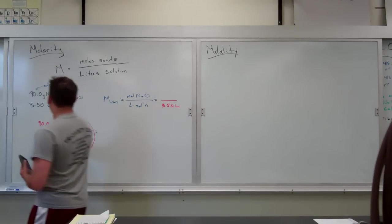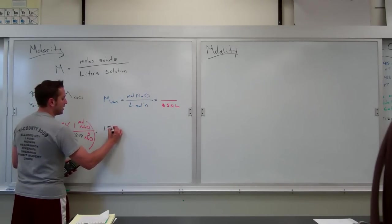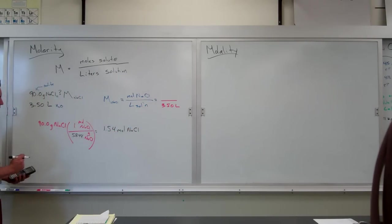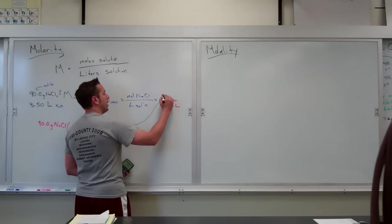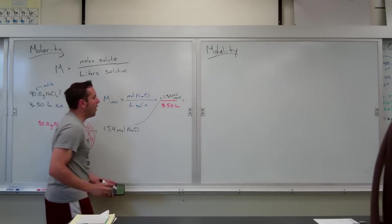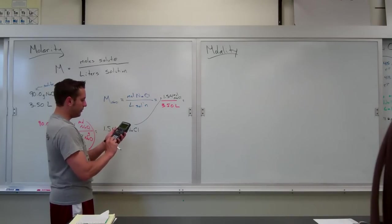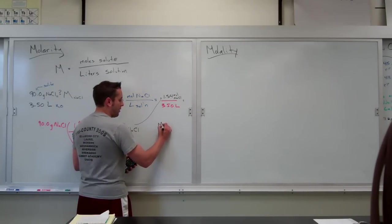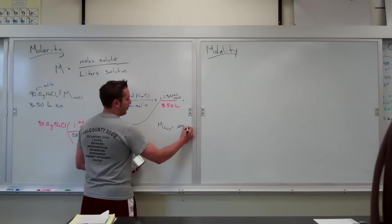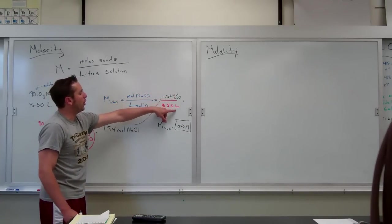I get a number of 1.5400. I get 3 sig figs here and 4 here, which means I get 3 in my answer. So I can express this as 1.54 mol NaCl. Now I have the moles of what I wanted, so I can plug it in. 1.54 mol NaCl. I do one last division to get my answer. And with 3 sig figs, I would say my molarity of NaCl is 0.440 big M. And remember, big M will always hide moles per liter.